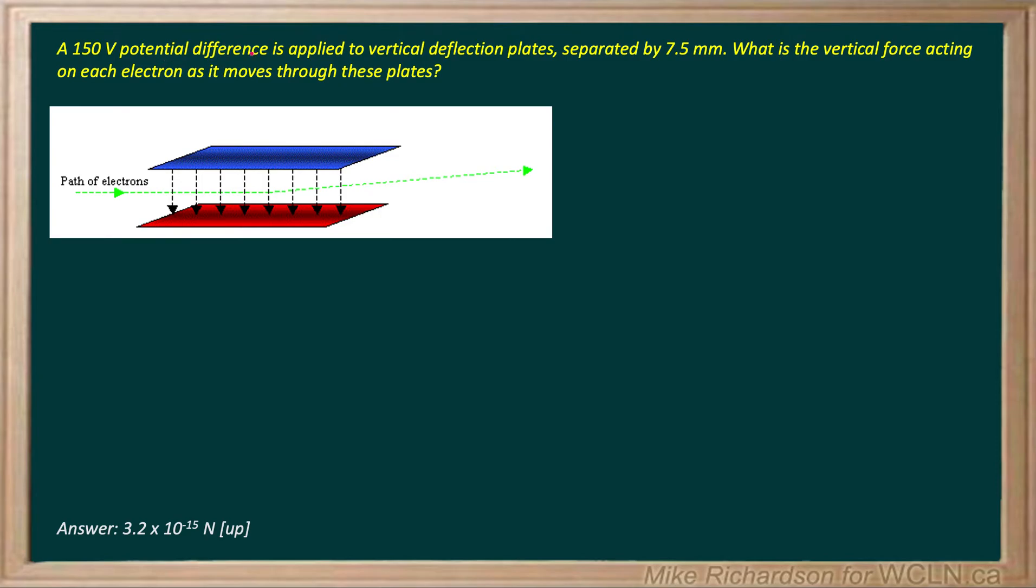A 150-volt potential difference is applied to vertical deflection plates as shown, and as the electrons pass between these plates they're deflected upwards as you see in the picture. We want to know what is the vertical force acting on each electron as it passes through the plates.